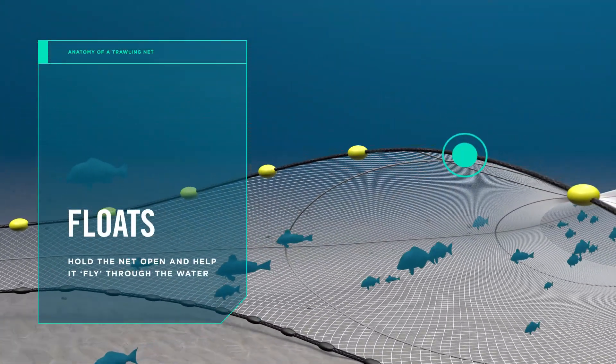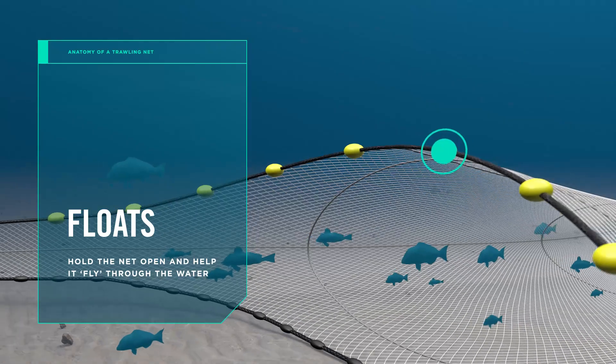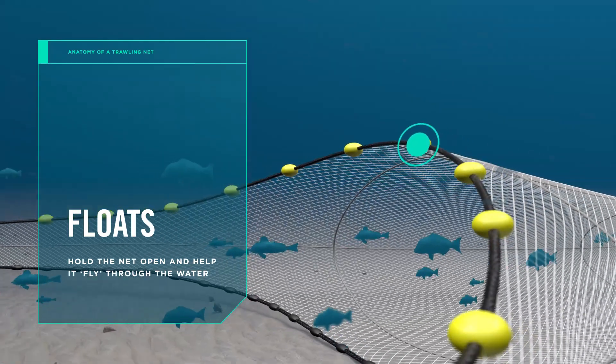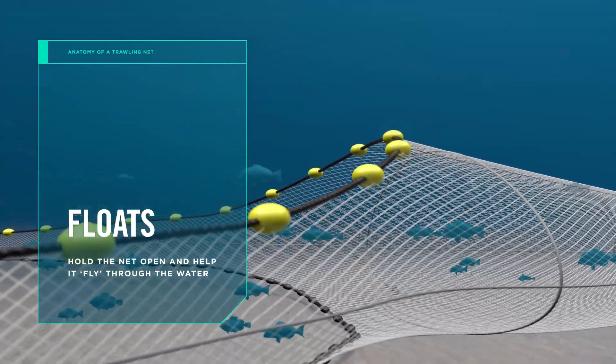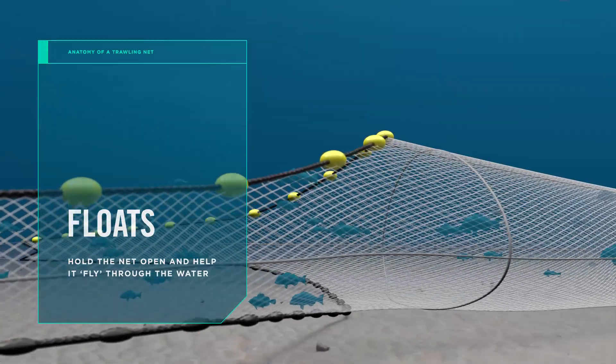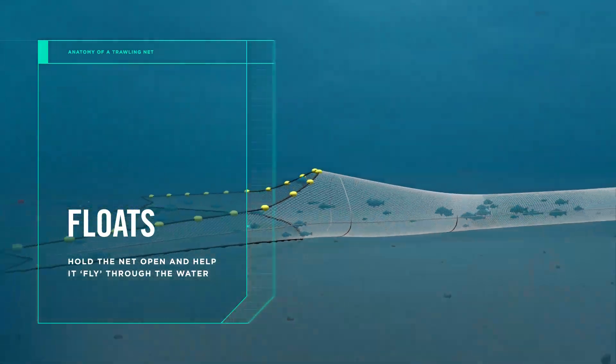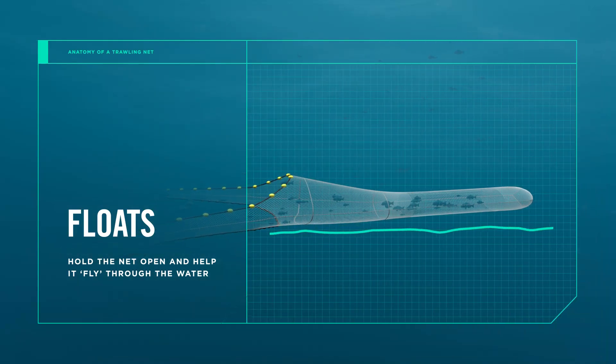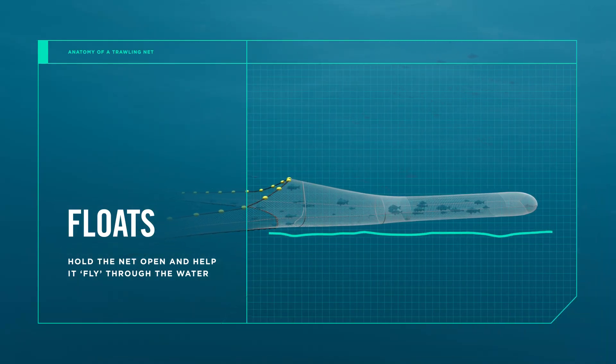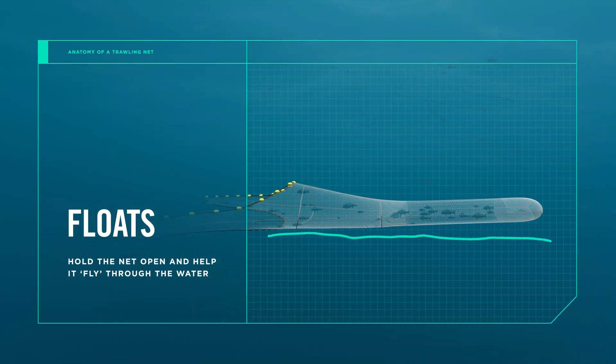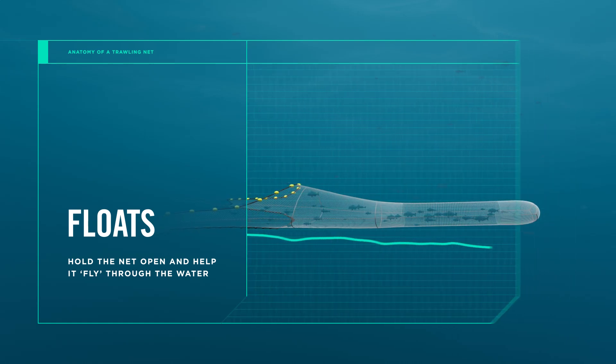Floats hold the top of the net up and open and help it fly through the water rather than dragging across the seabed. Our nets are valuable assets that we don't want snagging on underwater objects, so we aim to touch the bottom as little as possible and avoid fishing in areas that are rocky or have coral reefs.